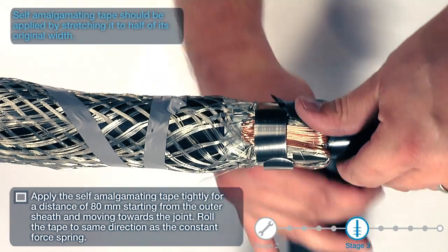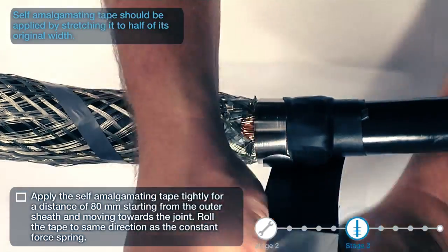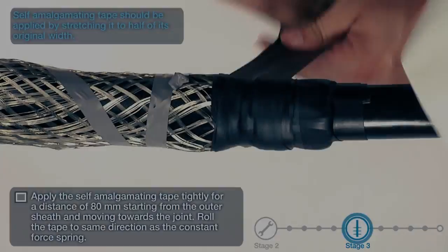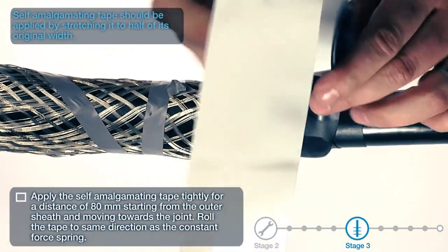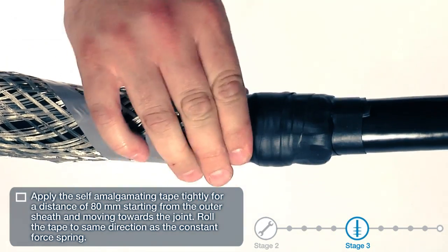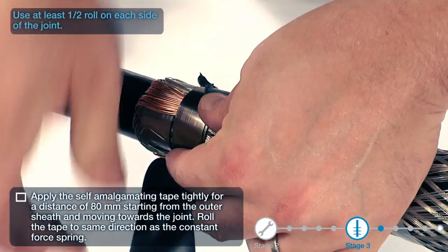Apply the self-amalgamating tape tightly for a distance of 80 millimeters starting from the outer sheath and moving towards the joint. Roll the tape to the same direction as the constant force spring. Self-amalgamating tape should be applied by stretching it to half its original width. Use at least half a roll on each side of the joint.